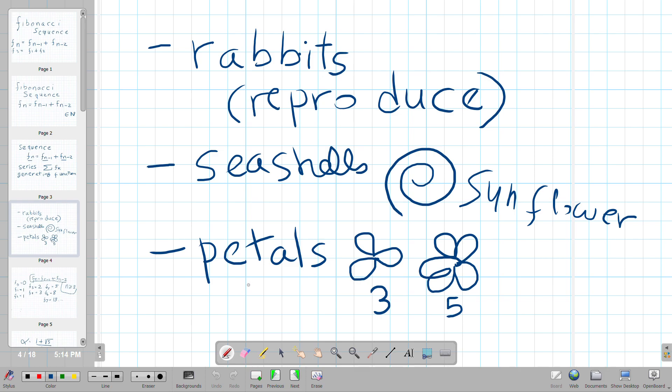The historical way to describe the series is about the reproduction of rabbits. But it's also been talked about how seashells, the chambers within seashells, spiral out in a way that fits the Fibonacci sequence.